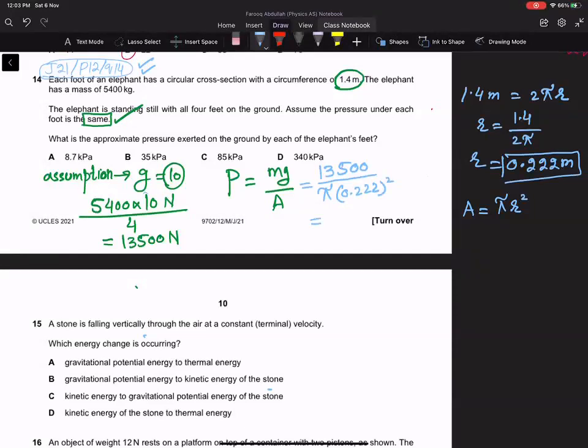It will become 13,500 divided by π times 0.222 squared, and this will give us 87,192 pascal, which means that